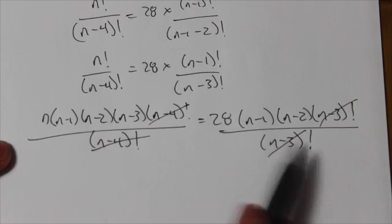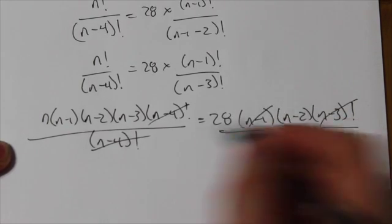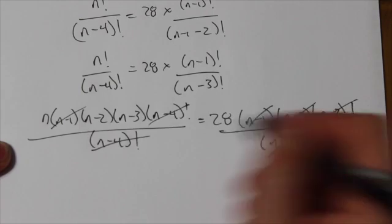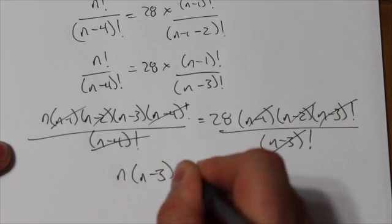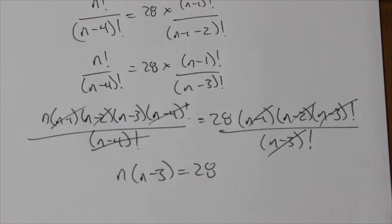Now, I notice that on either side, there's shared factors, n minus 1, n minus 2, and so when you simplify that all down, I get that n times n minus 3 is equal to 28.